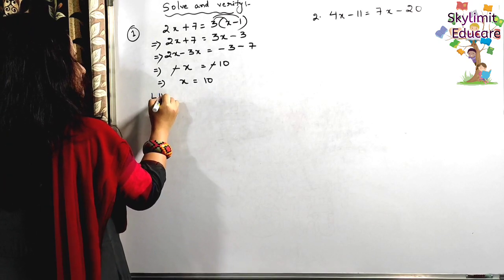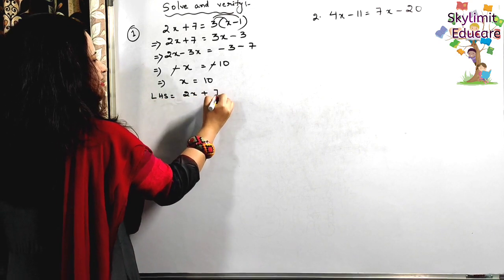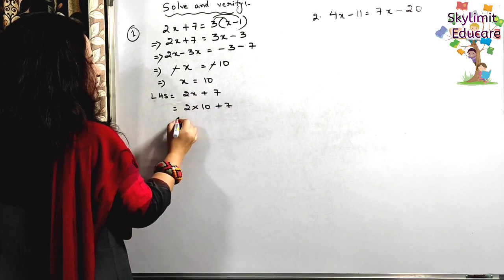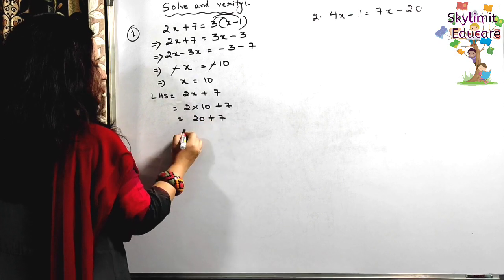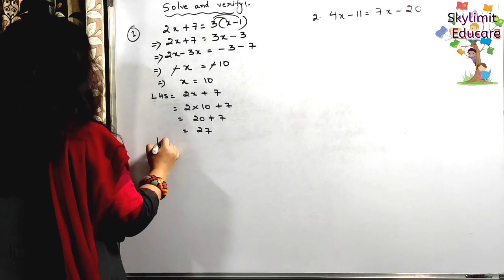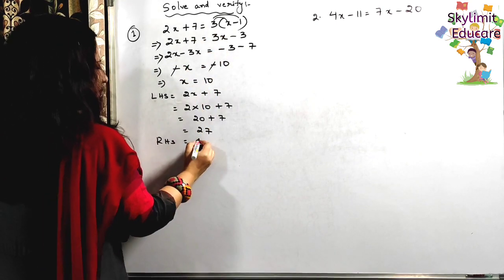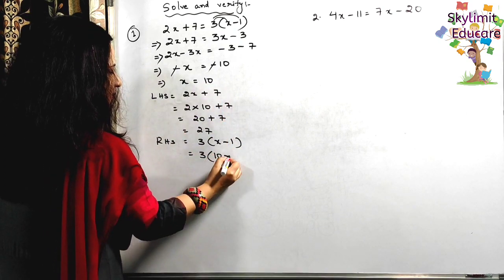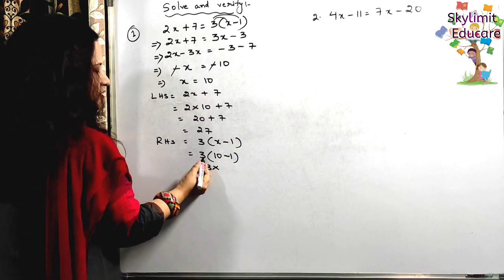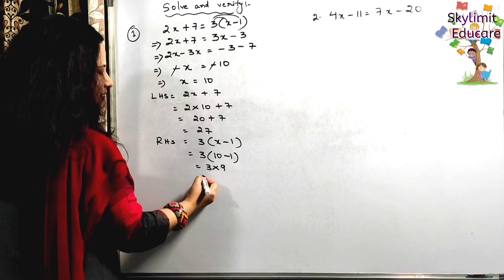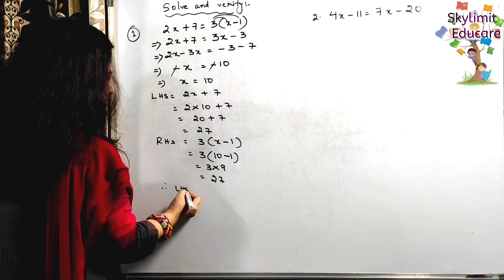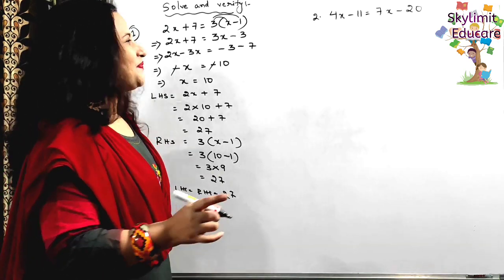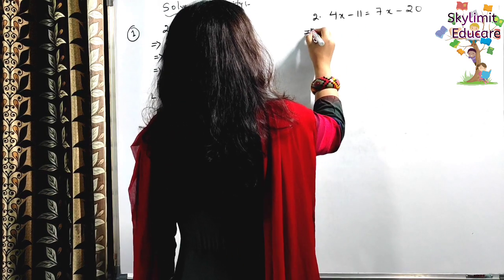Now let's verify. LHS is 2x + 7: substitute x = 10, so 2 × 10 + 7 = 20 + 7 = 27. RHS is 3(x - 1): that is 3 × (10 - 1) = 3 × 9 = 27. Therefore LHS = RHS = 27. Hence verified.